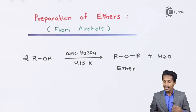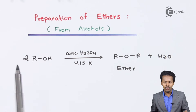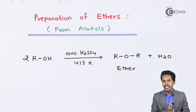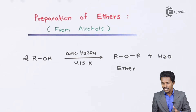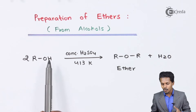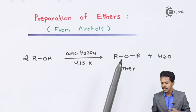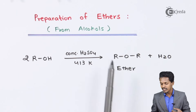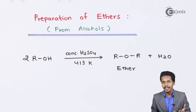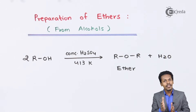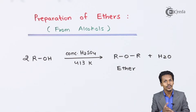Only a simple ether can be prepared from this method. Since we consider excess alcohol, this is a process where intermolecular dehydration takes place — between one ROH and another ROH — and the ether formed is a simple ether, meaning both alcohol groups are the same.